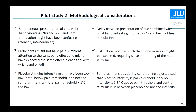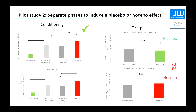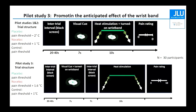So we changed the stimulus intensities: placebo intensity now at pain threshold, nocebo intensity at pain threshold plus 1.6 degrees, and control stimulus in between. In the new trial structure, we had the intertrial interval, the visual cue, then a delay during which the wristband was already turned on together with the visual cue — so the treatment starts — and then the heat pain stimulation occurred, followed by the pain rating.